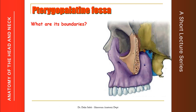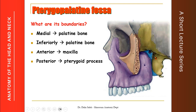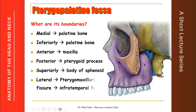The pterygopalatine fossa is a pyramidal space, but lies upside down. Its medial wall is made by the palatine bone — the one colored blue here. It is closed inferiorly by part of the palatine bone called the pyramidal process. Anteriorly, the purple bone here is the back of the maxilla. Posteriorly, we have the root of the pterygoid process, and the pterygoid process is part of the greater wing of sphenoid. Superiorly, the roof of the pterygopalatine fossa is made by the sphenoid bone. Laterally, the pterygopalatine fossa opens into the infratemporal fossa through this fissure, which is called the pterygomaxillary fissure — the fissure between the maxilla and the pterygoid process.